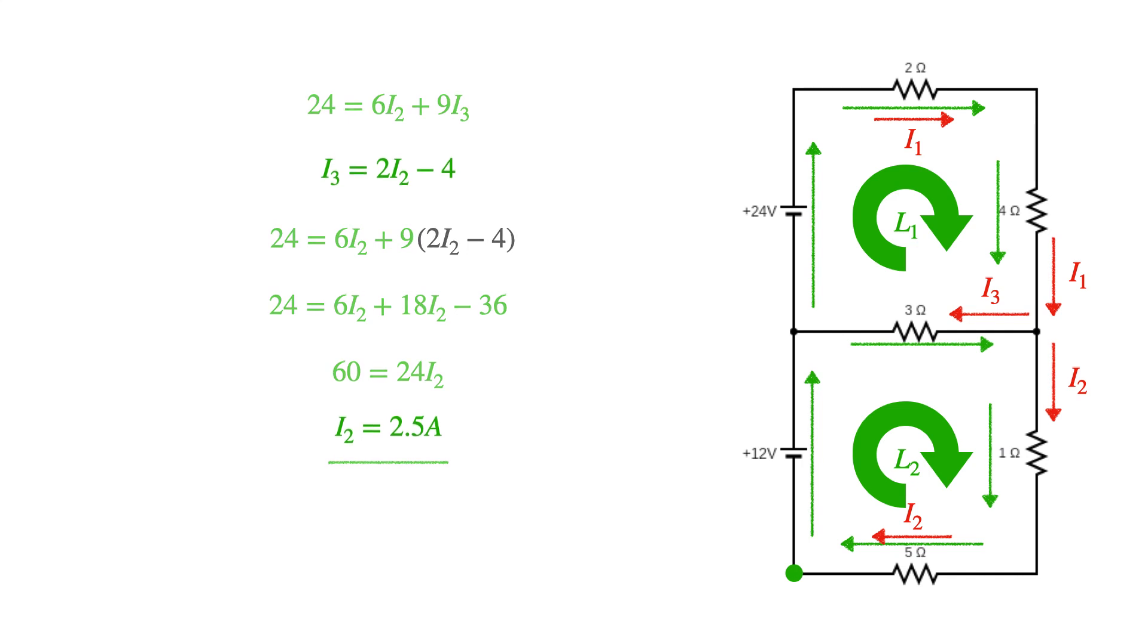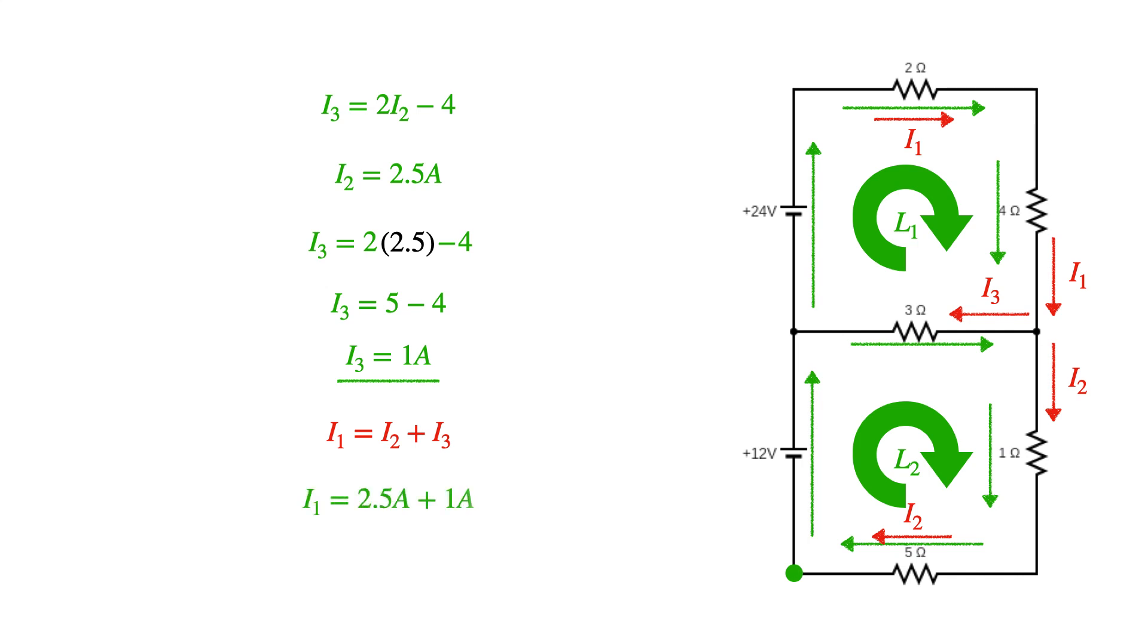Knowing this, I plug back into my statement for I3 and find that current three is equal to 1 amp. Applying my rule for current, I find that the current in branch one is simply 3.5 amps. And now I know the current in all three branches as 3.5 amps, 2.5 amps, and 1 amp.